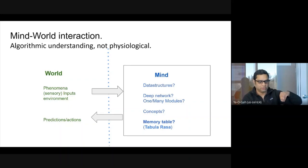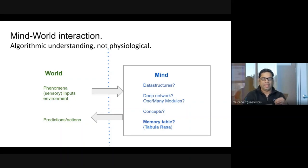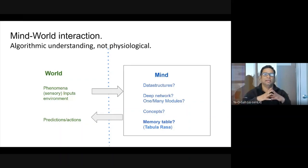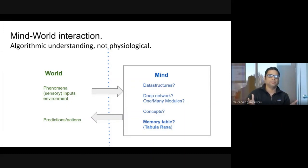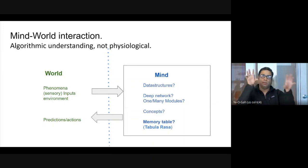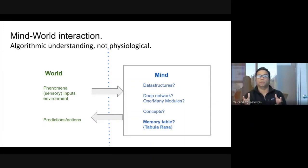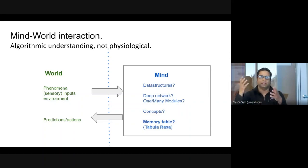Let's try to understand this not from a physiological perspective — how the brain does it — but rather if you were to have a logical architecture for the mind, like a block diagram, what would be the algorithmic compute components? What kind of data structures? Should we think of the mind as a single deep network? Is that the right abstraction, or are there multiple modules — each a separate deep network, or perhaps other modules which are not deep networks?